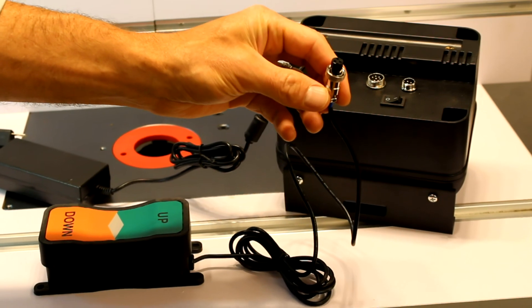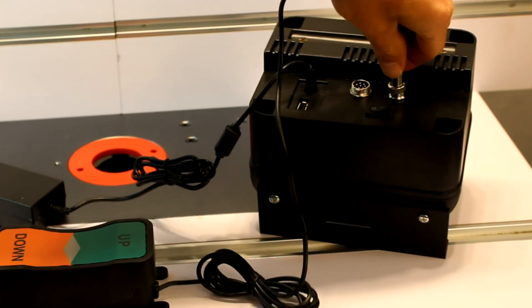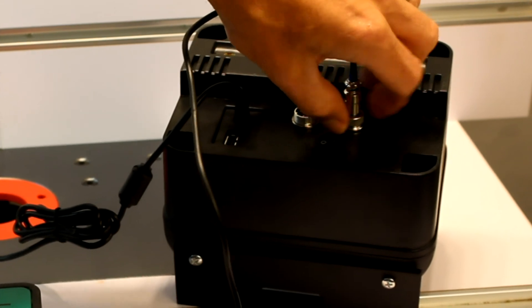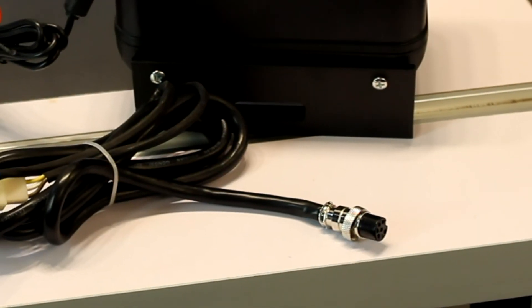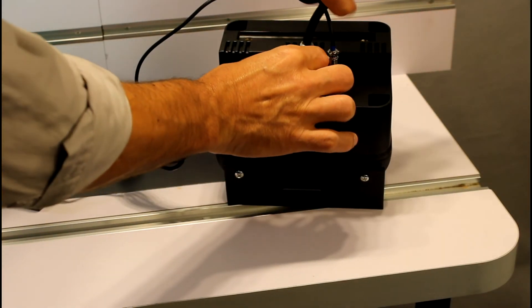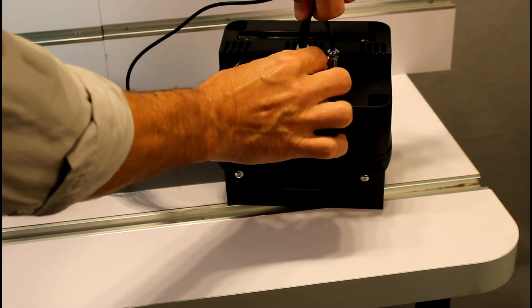The foot pedal plugs into the smaller round port and screws in tightly for a secure connection. The connections to the lift go into the larger round port and get locked into place with a threaded ring on the connector.